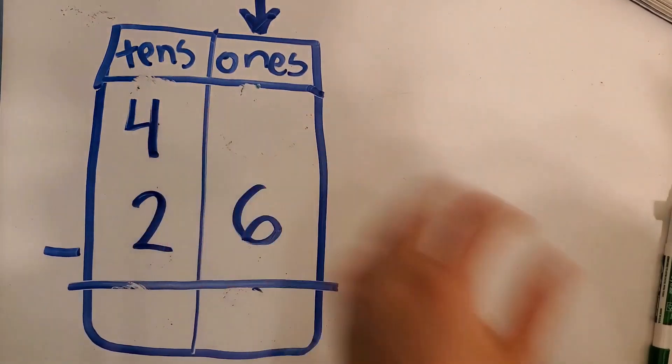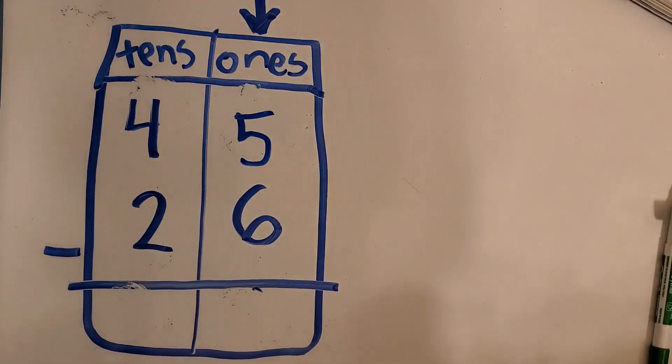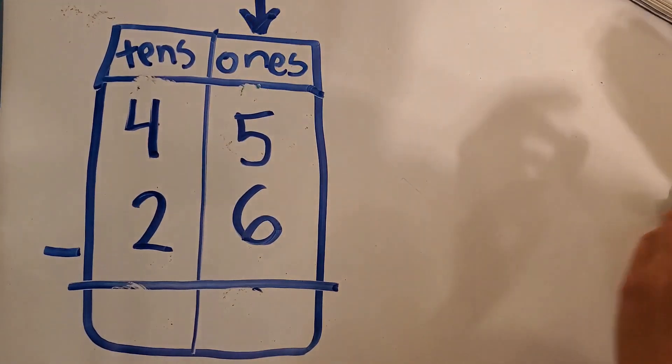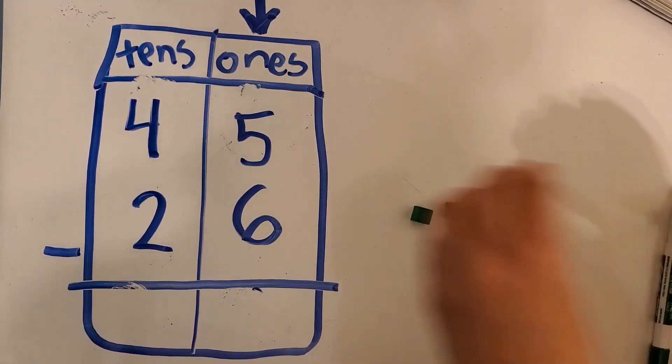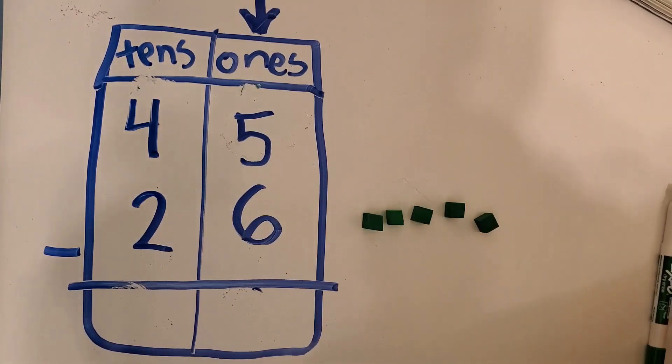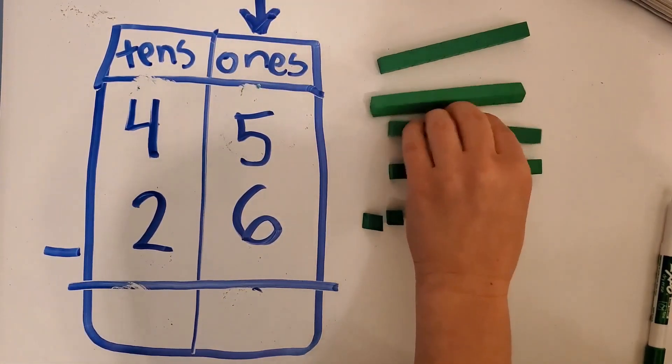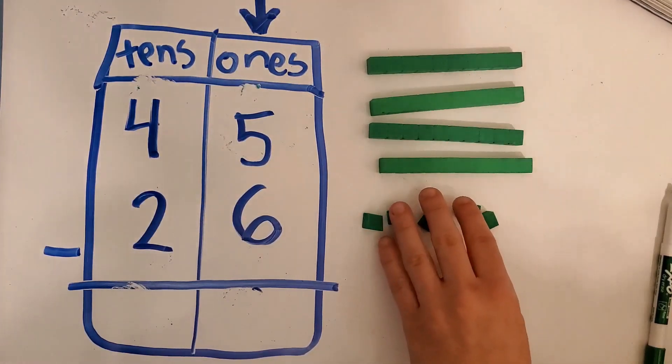Actually my five is a little bit too high, so I'm going to scoot them down just a little bit. We're going to make the whole with our pieces, so we have five ones in our top number. There's five ones and there's four tens. So that gives us 45, four tens and five ones.